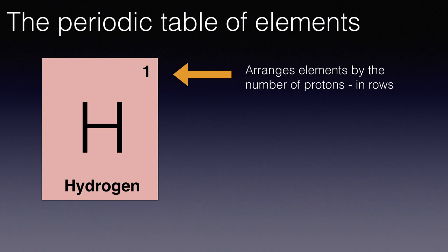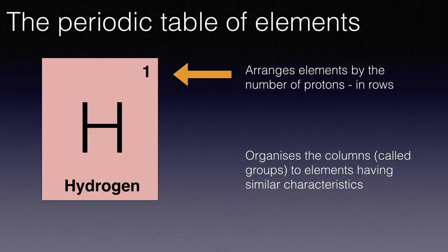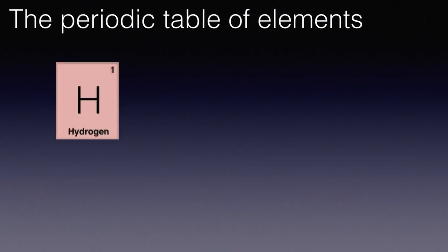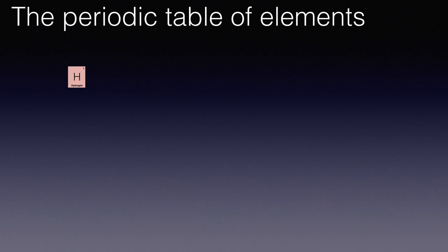And the table is made up in rows, but the rows have spaces in them so that the resulting columns or groups arrange or organise the columns to elements having similar characteristics, for example, the noble gases or the metals. Now here's a row, the first row of the periodic table, and it only has two elements in it, hydrogen with one proton and helium with two protons.